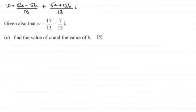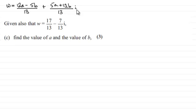Hi there. Now in part B of the previous part of the question, we came up with W equaling 12a minus 5b over 13, plus 5a plus 12b over 13, multiplied by i. We're also given that W equals 7 thirteenths minus 7 thirteenths i. And now we've got to find the value of A and the value of B for three marks.